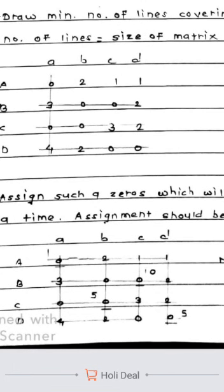So here what you need to remember is that the last step you need to assign zeros in such a way that there will be allocation one at a time. Not two rows or two columns will have same assignment in that particular row or column.